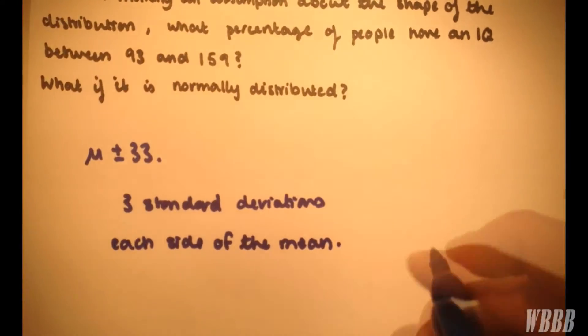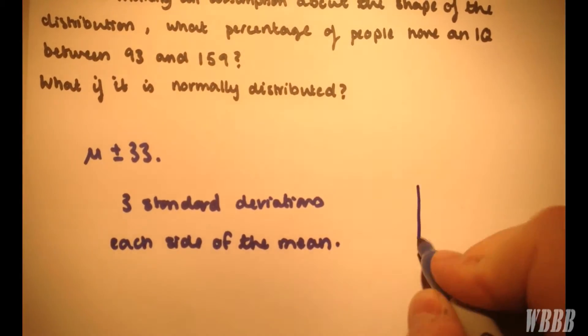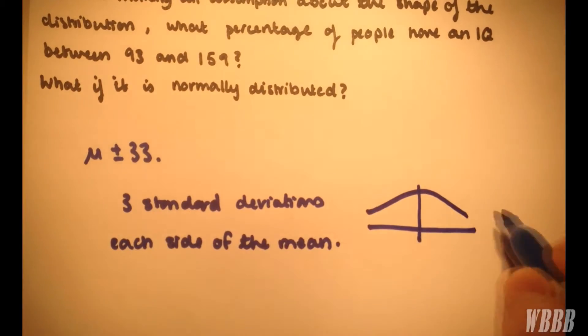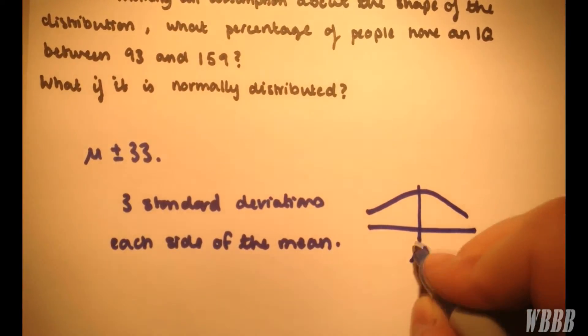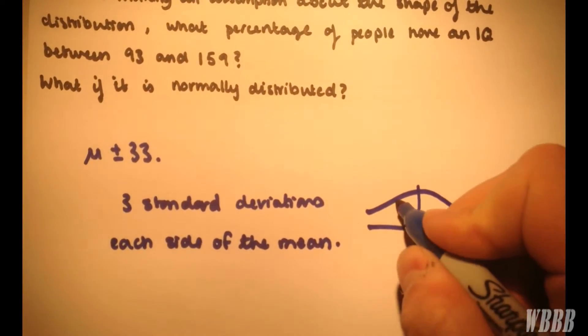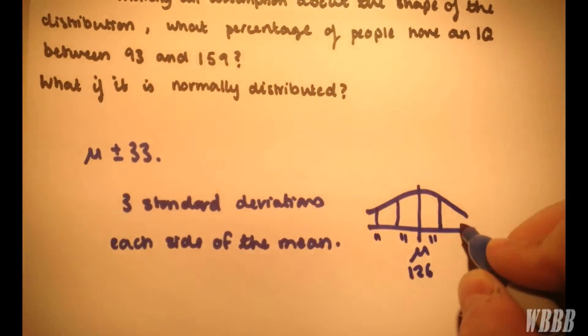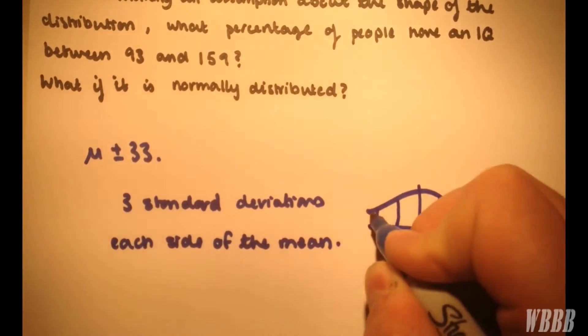So what does this mean graphically? Well, if we consider it normally just for a second, and we say the mean is here at 126, and we have a standard deviation either side of the mean here, with 11 and 11, and another one here with a further 11, and another one here, another 11.